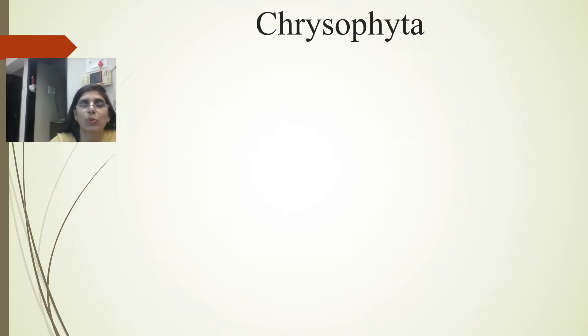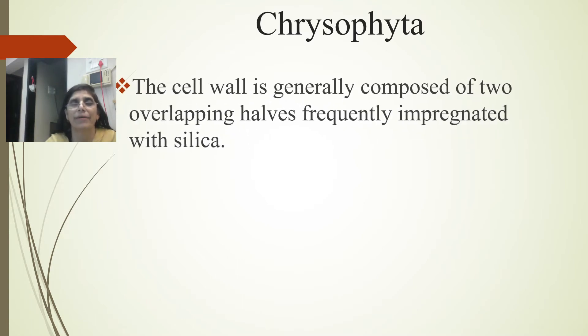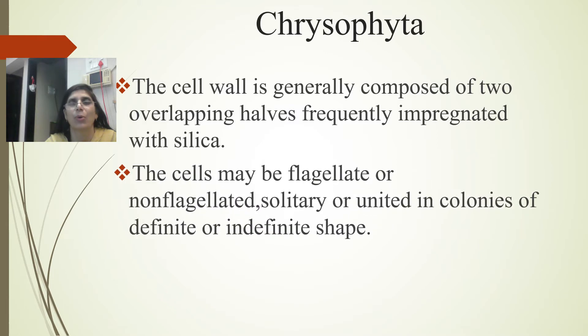The cell wall is generally composed of two overlapping halves, frequently impregnated with silica. The cells may be flagellate or non-flagellate or aflagellate, solitary or united in colonies of different definite or indefinite shape.